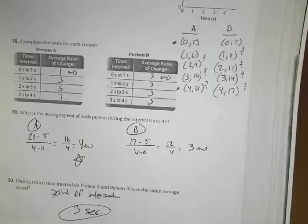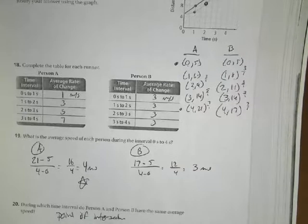So what is the average rate of speed for each person during the interval from 0 to 4? So 0 to 4, looking at the average rate of speed from this point to this point here, all the way through. So for person A, I'm going to look at 21 - 5 over 4 - 0. And that's going to leave me with 16 over 4 or 4 meters per second. And for person B, we're looking at 17 - 5 and 4 - 0, which is 12 over 4 or 3 meters per second. So my average rate of change, this one has the greater average rate of change. It's increasing longer there.